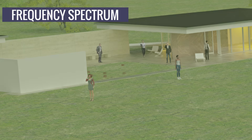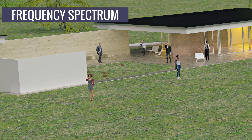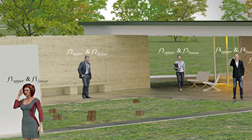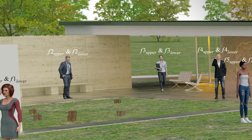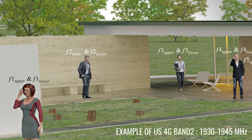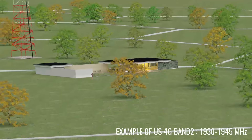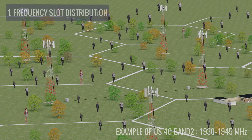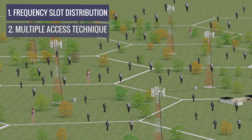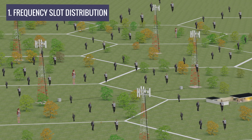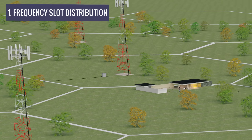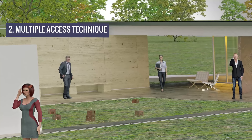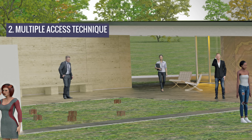Now let's discuss why the frequency spectrum is quite important in mobile phone communications. To transfer zeros and ones in digital communication, each subscriber is allocated a frequency range. However, the frequency spectrum available for cellular communications is quite limited, and there are billions of subscribers. This issue is solved with the help of two technologies: one, frequency slot distribution, and two, multiple access technique. In the first technique, different frequency slots are carefully allocated to different cell towers. In the multiple access technique, this frequency slot is efficiently distributed amongst all the active users in the cell area.